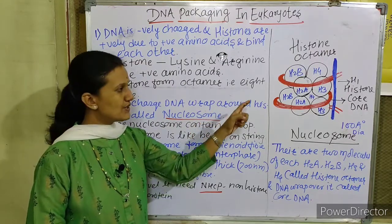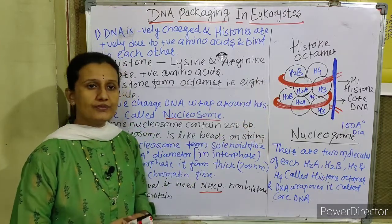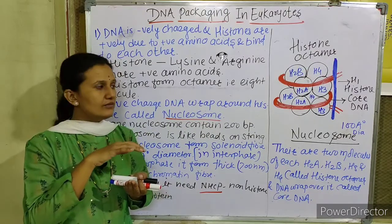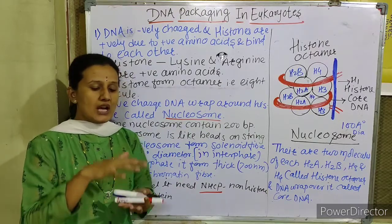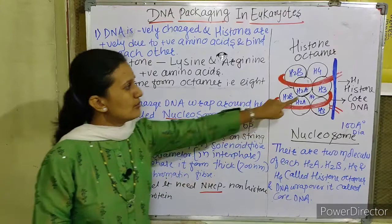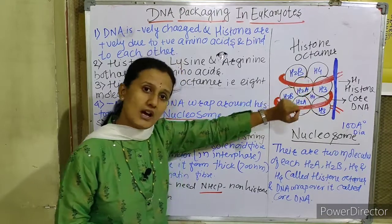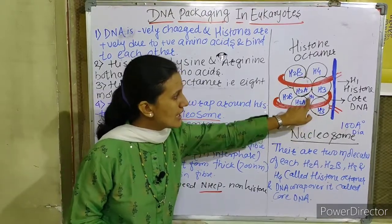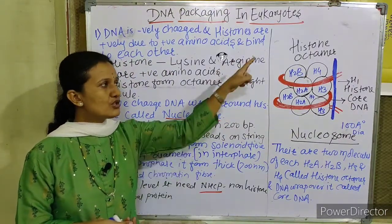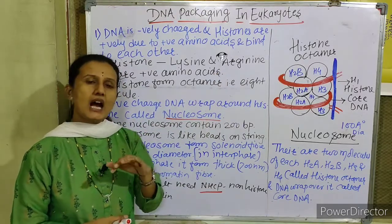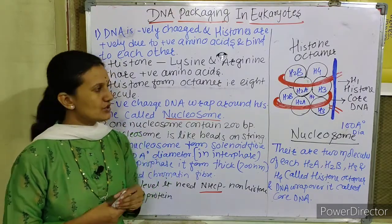Again, the 5 histone proteins are: H1, H2A, H2B, H3, and H4. These four proteins — H2A, H2B, H3, H4 — and again H2A, H2B, H3, H4 — together form a histone plate-like structure, which is the histone octamer.